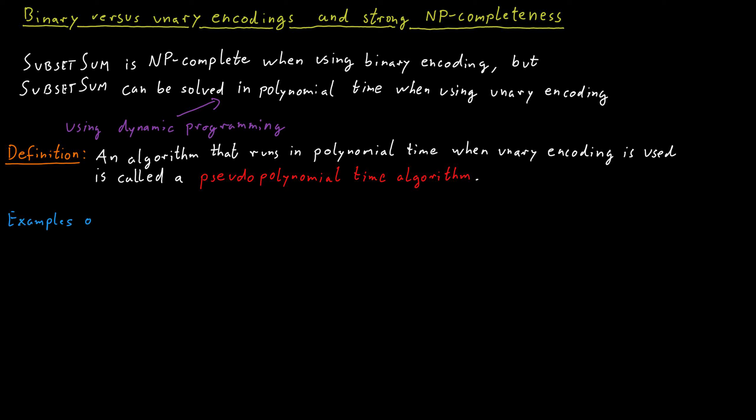So here are a few examples of problems for which no pseudopolynomial time algorithm is known. The easiest example is maybe the halting problem, because it's just undecidable, and it remains undecidable no matter how you encode the input. Then a slightly more interesting example is the problem satisfiability, which we've seen as NP-complete. Now in satisfiability, the thing is that numbers actually play no critical role in the input. So it doesn't really matter how we encode numbers. And so for satisfiability, we also don't know any pseudopolynomial time algorithm.